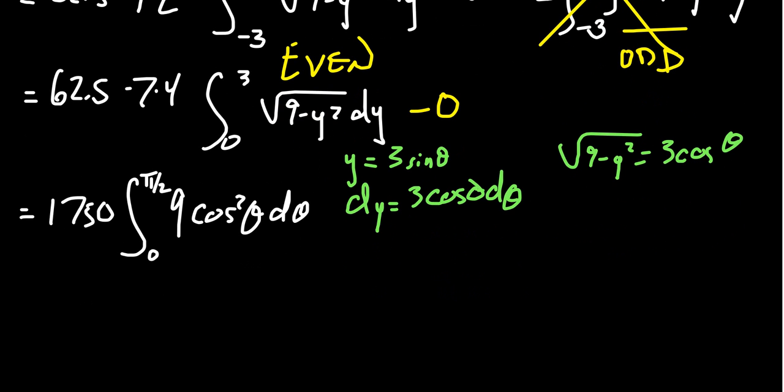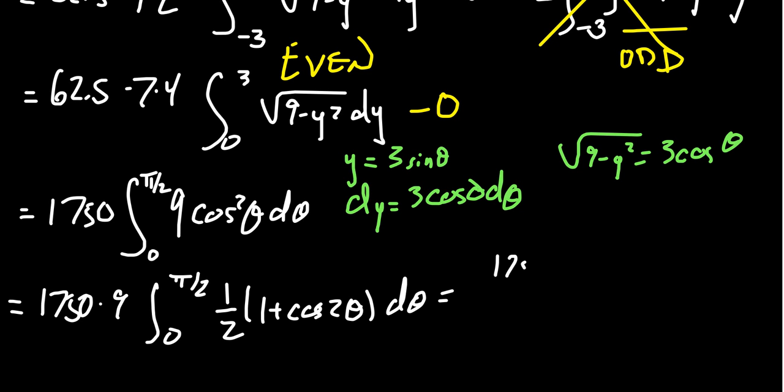In order to do cosine squared, you're going to have to use the half angle identity. So you get 1750 times 9, integral from 0 to pi halves of 1 half, 1 plus cosine of 2 theta d theta. Its antiderivative is going to look like theta plus 1 half sine of 2 theta.